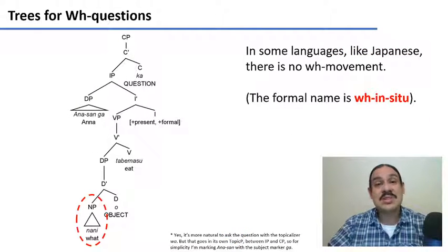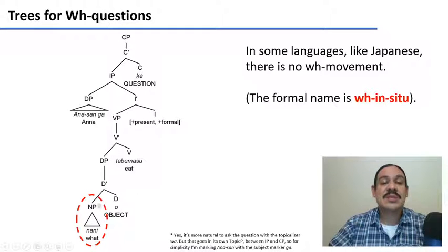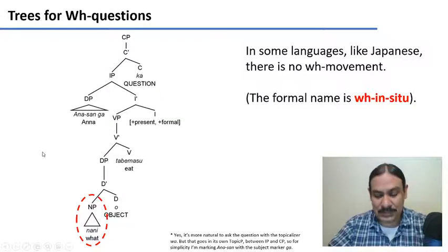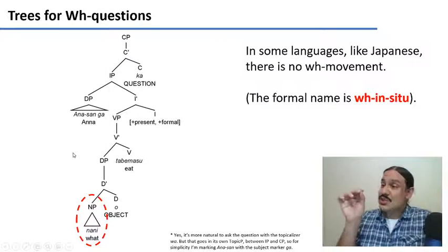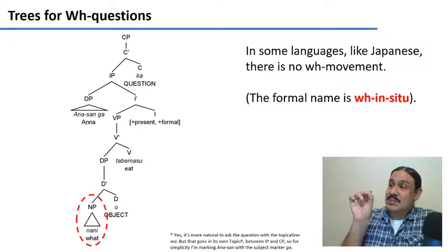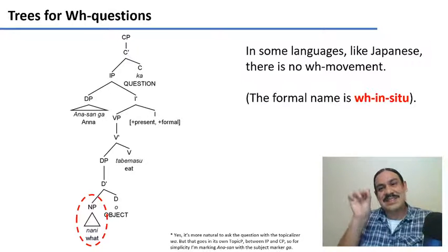This property is going to be WH-movement. There are languages that don't need this. There are languages where the question word appears in the same position as its answer, as in Ana-san-ga nani-o tabemasu-ka. We're going to call such a language a WH-in-situ language because the question word remains there. So as you can see, you can have a switch for whether your WH words move or stay in the same place as the answer. This is going to be another parameter.